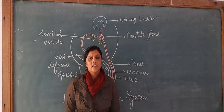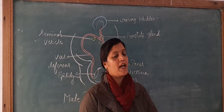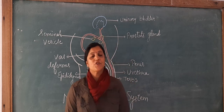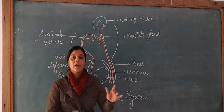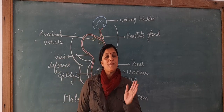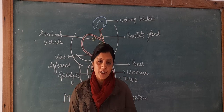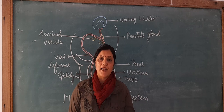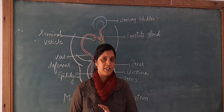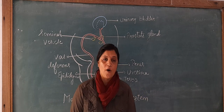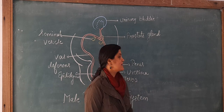Hello everybody. As we continue our chapter, in our previous class we discussed sexual reproduction in plants — the structure of flower, pollination, fertilization, how seeds and fruits form, and the structure of seed. Now we will start the next topic: sexual reproduction in humans.